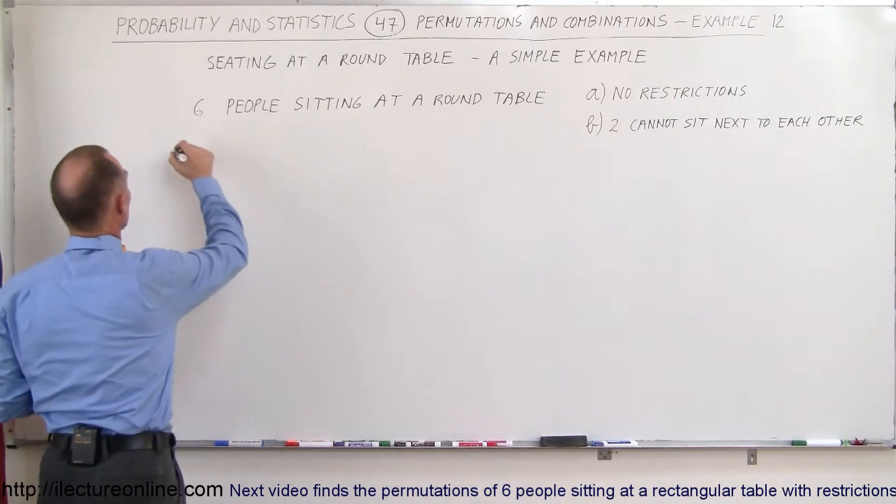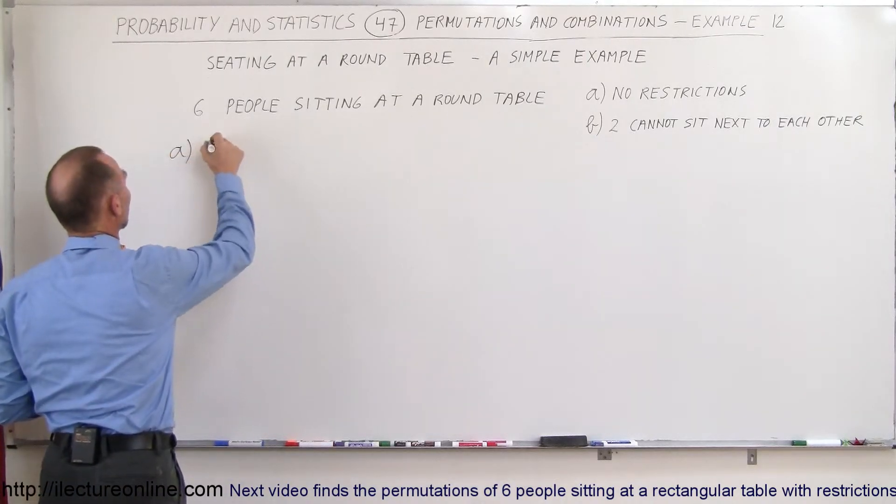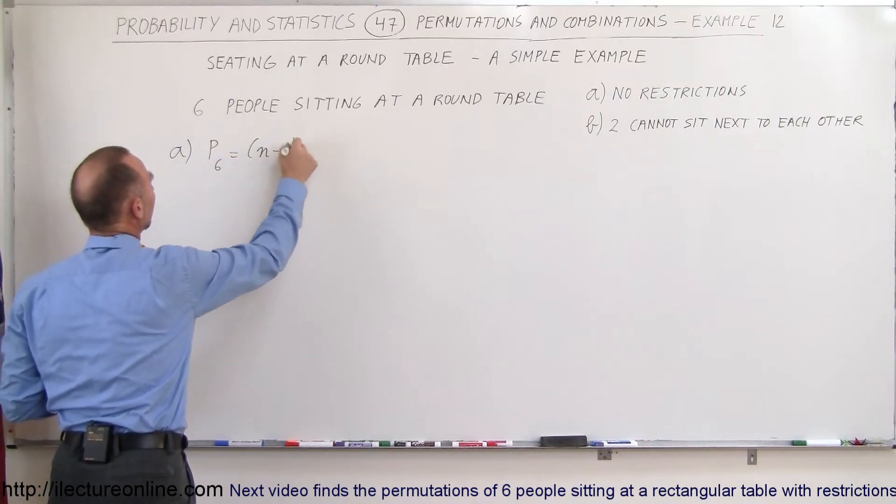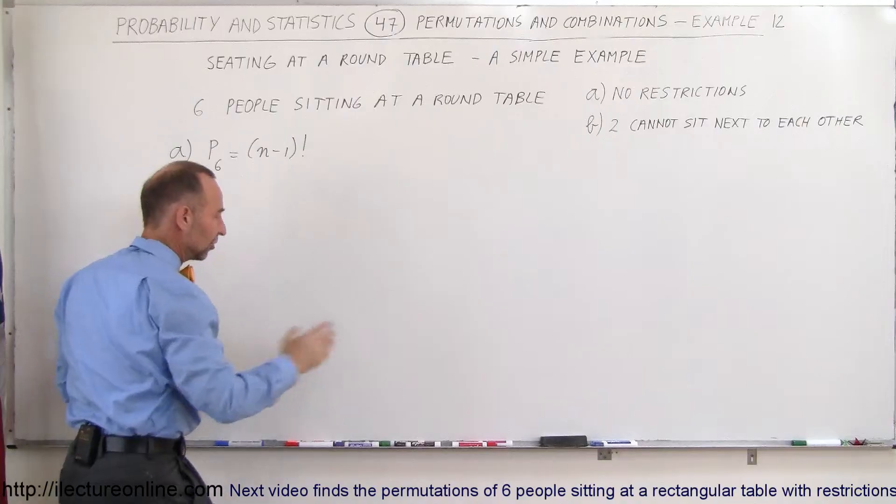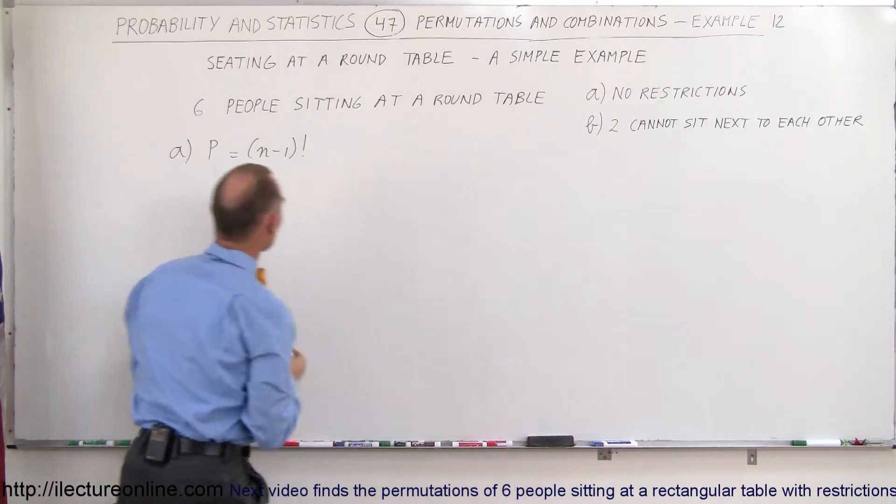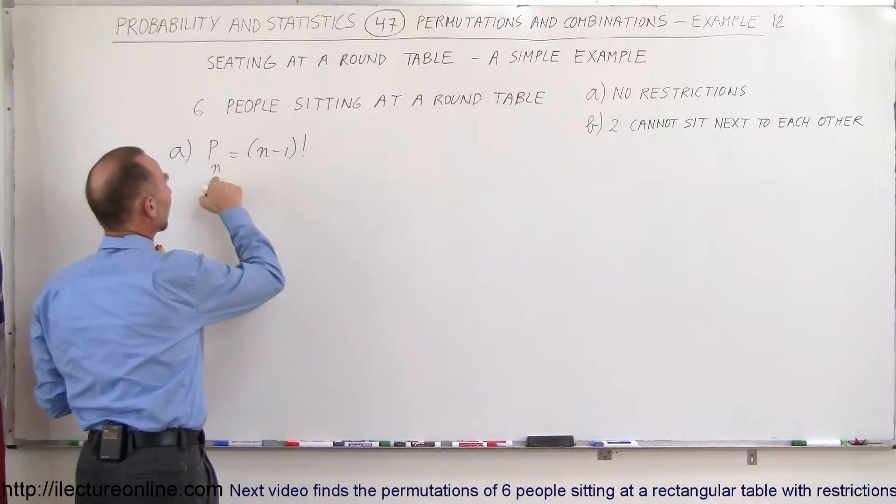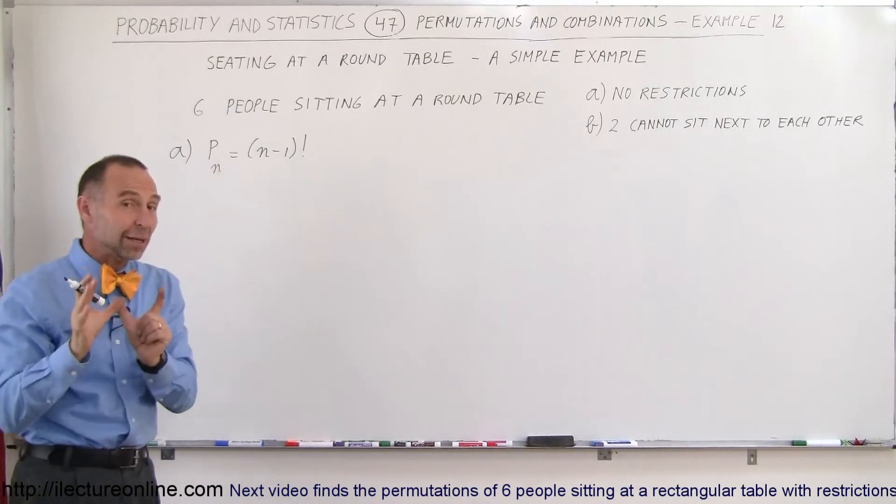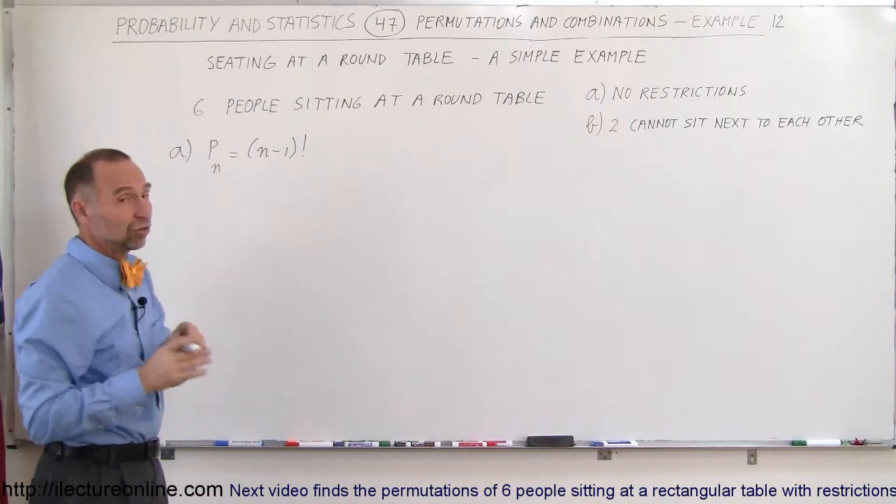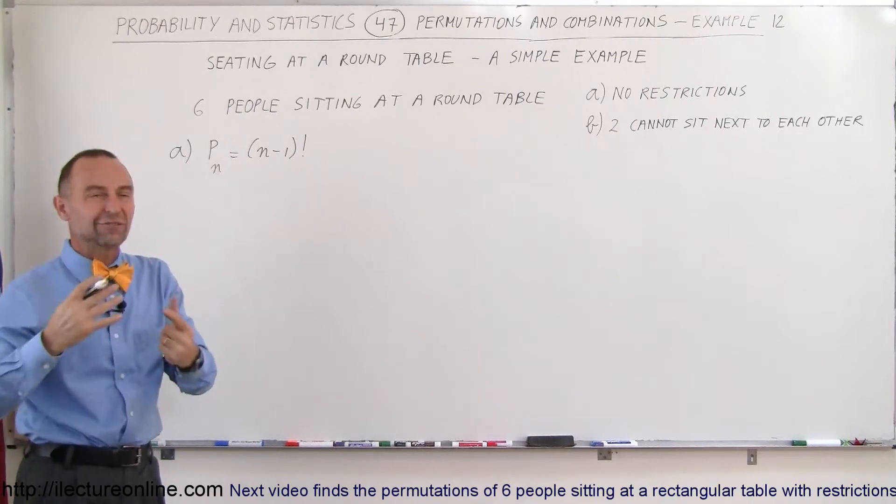So for part a, that's straightforward. We already know the equation. The number of permutations when you have six people, let me start out with the general equation first. Let's just write the n there. So if we have n people around the round table, this is only for a round table condition because if this was a rectangular table, then the number of permutations would be six factorial or n factorial.